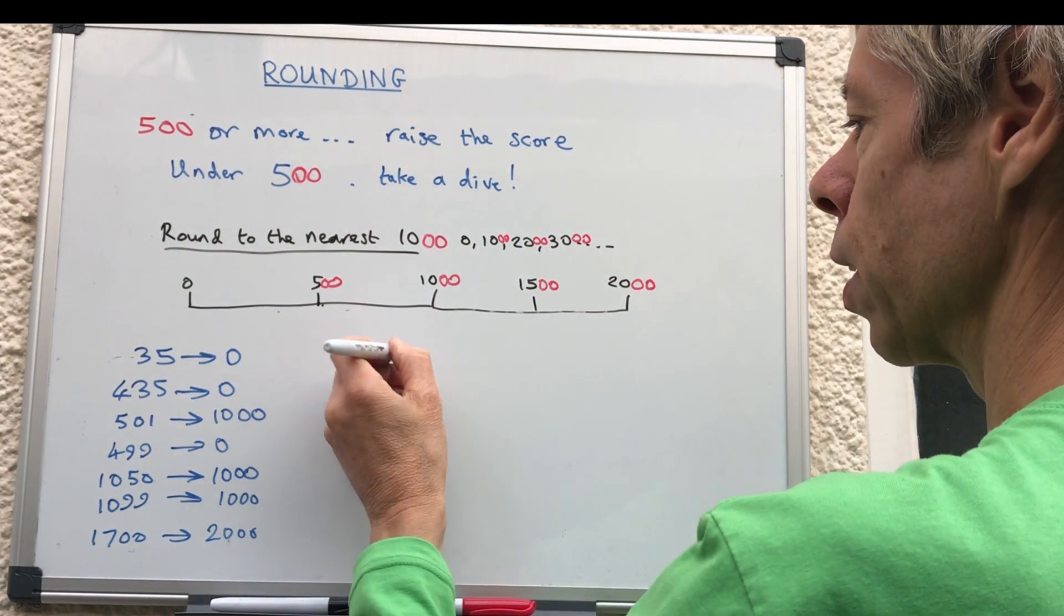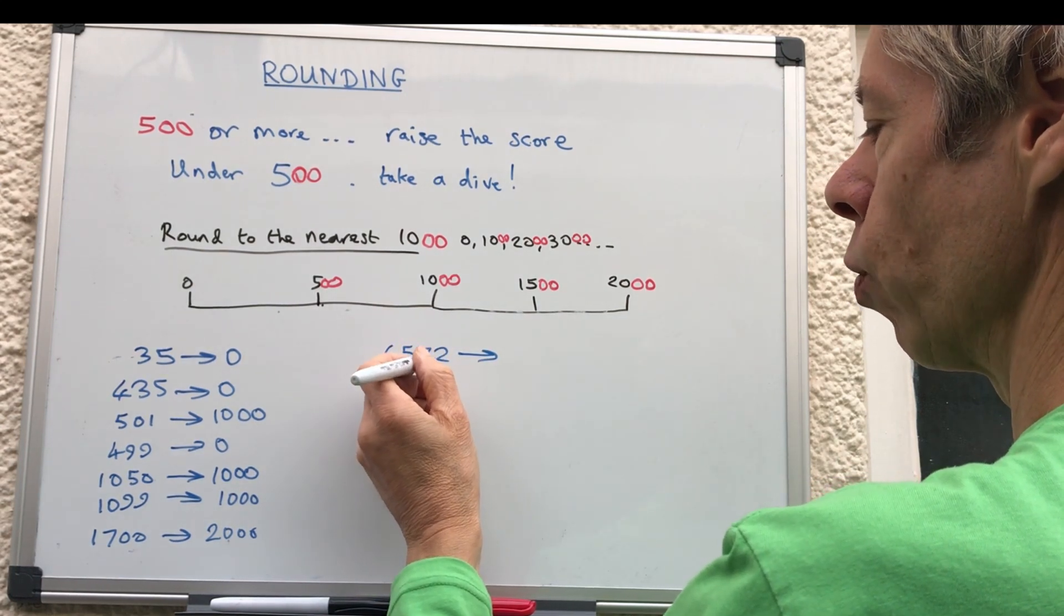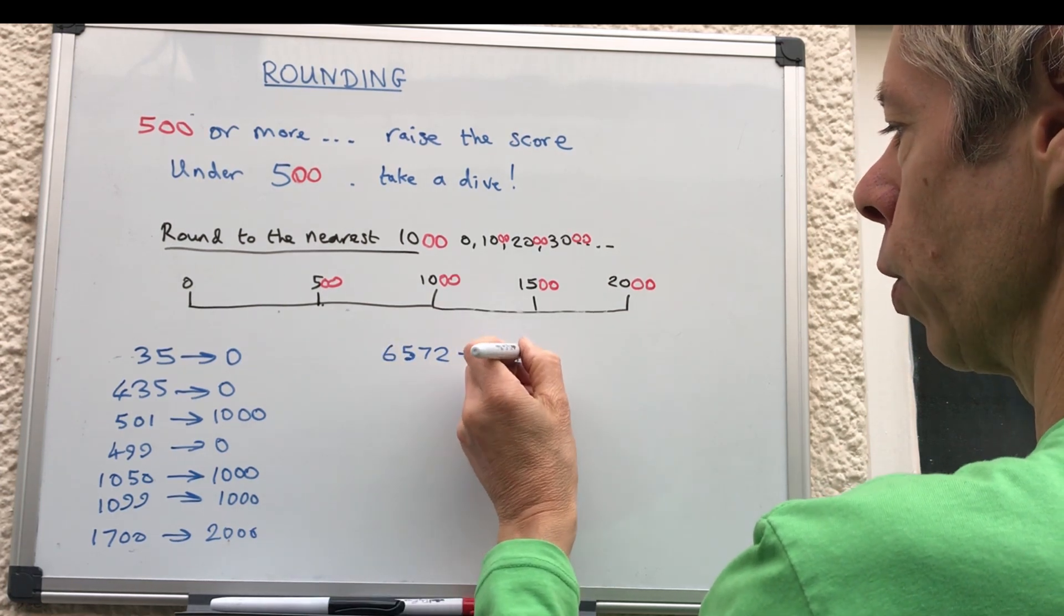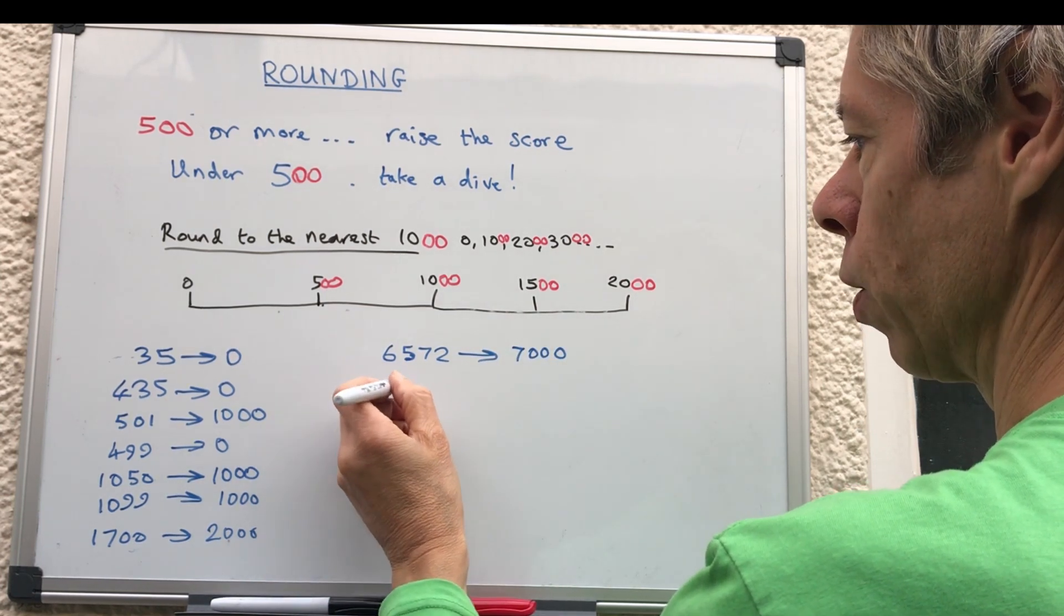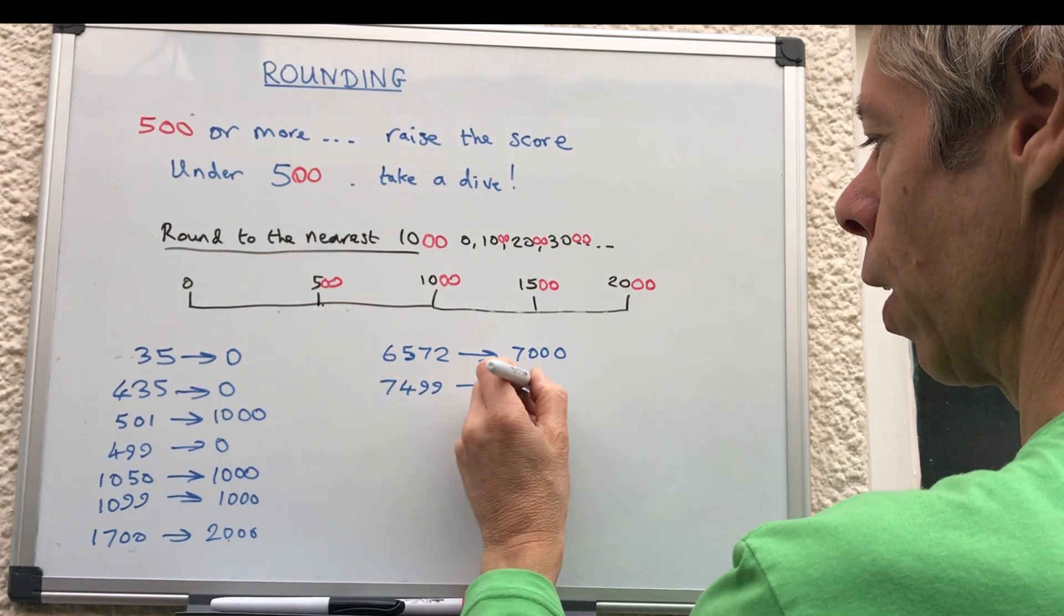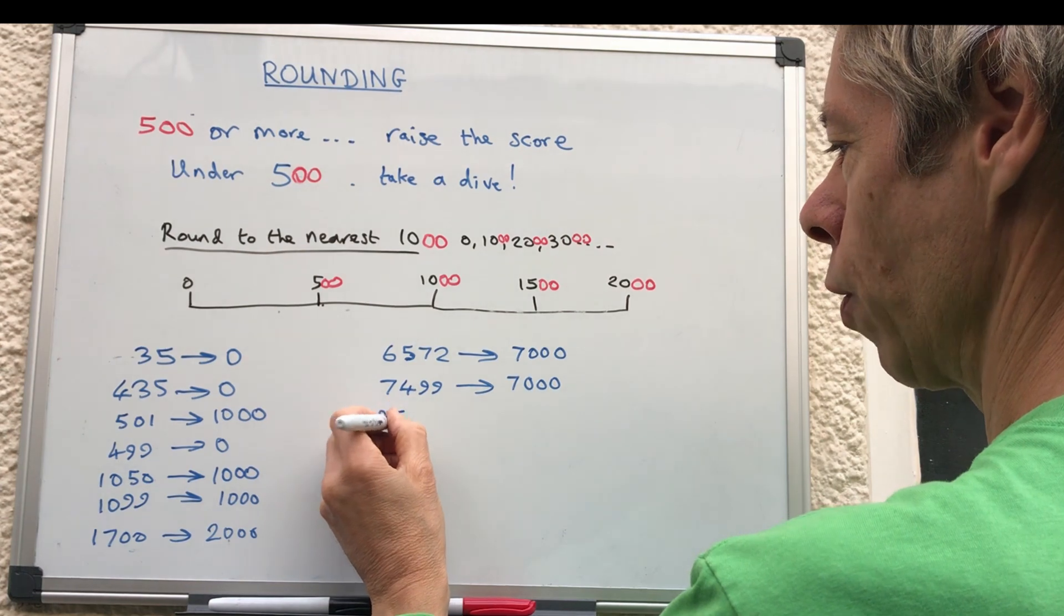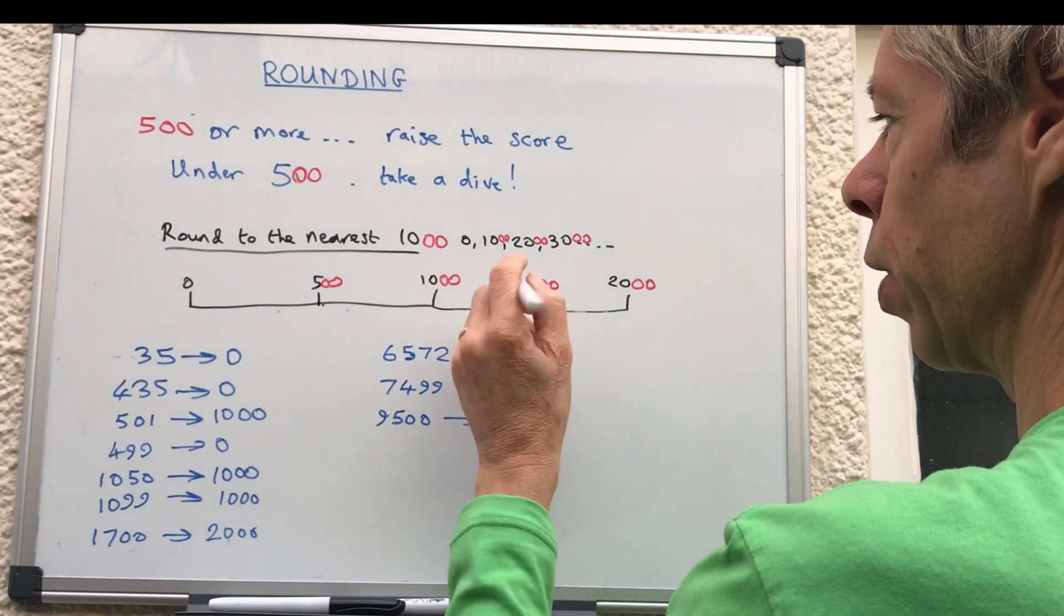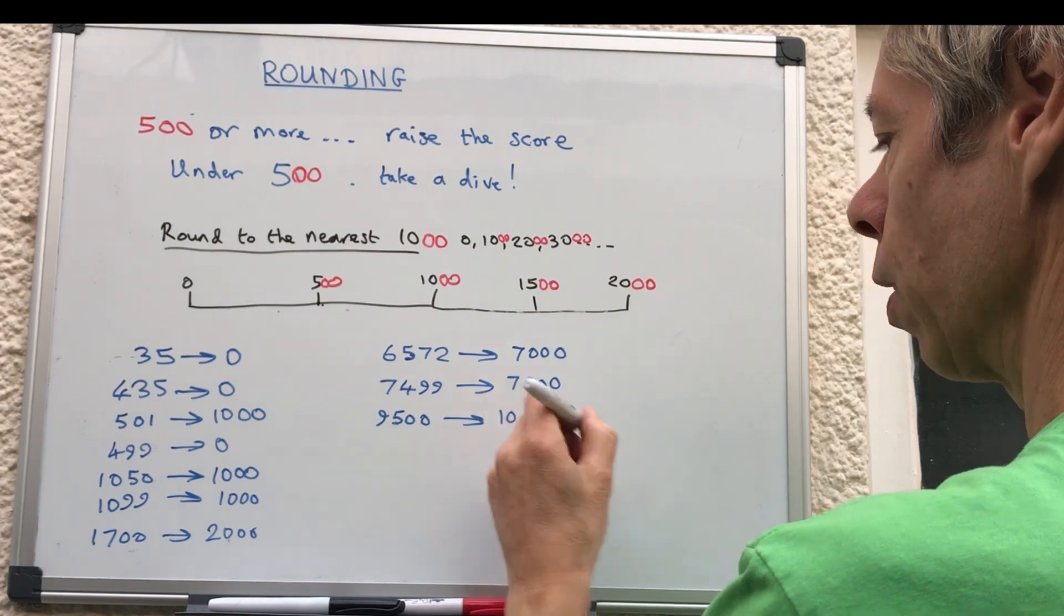So if we had 6572, we don't really worry about the 72. It's just this 5 because that's over 500, then that's going to go up to 7000. If we had 7499, again it's under 500, so that goes down to 7000. If we had 9500, because it's ticked over onto 500 which is the halfway point, that's going to go up to 10,000.